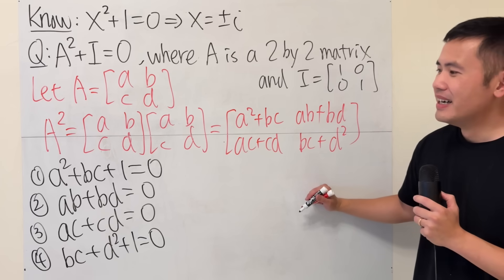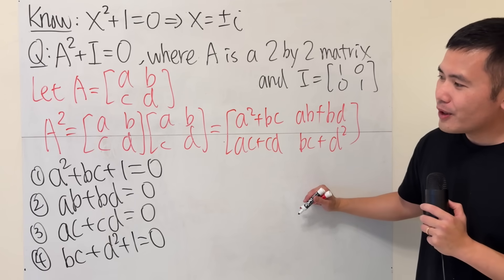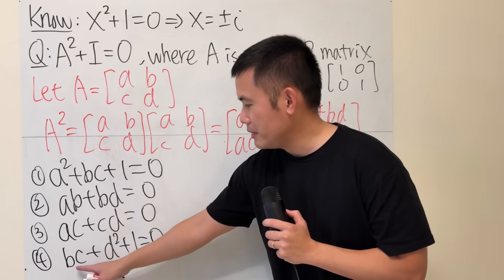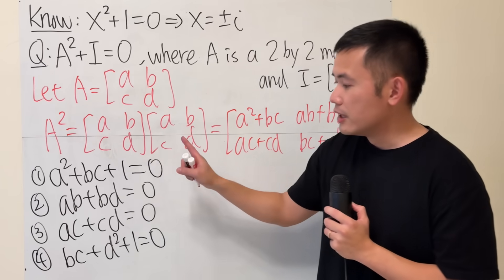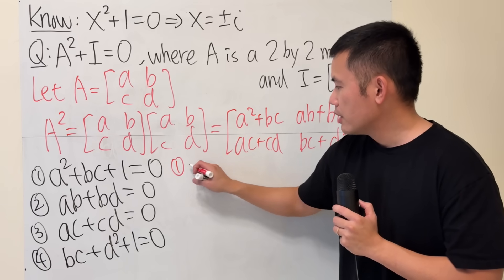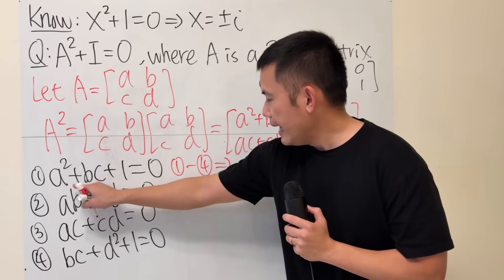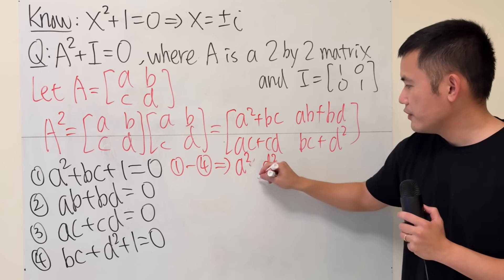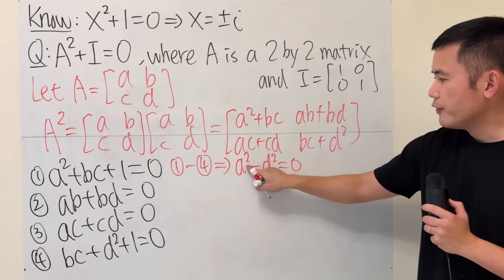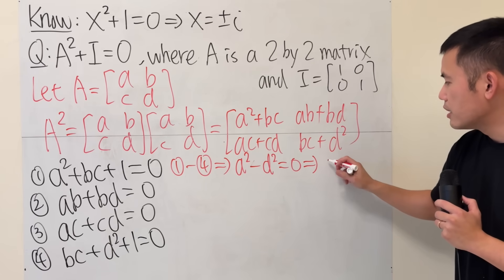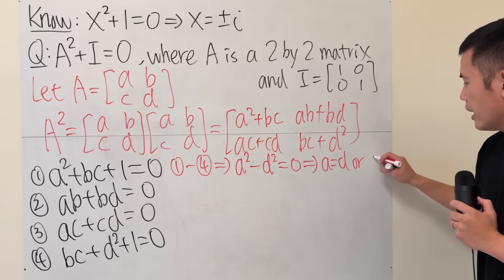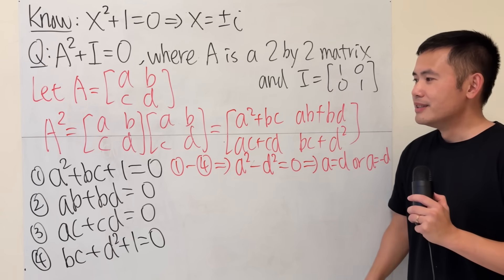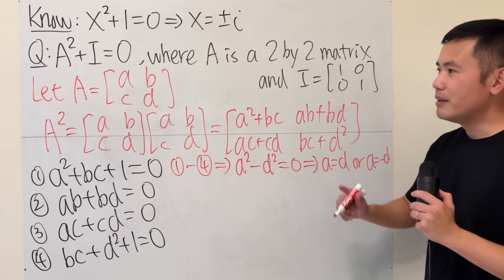These are the four conditions we need — not so easy, right? Looking at equations 1 and 4, both contain bc and 1. Subtracting equation 4 from equation 1 gives a² minus d² = 0, which factors to give us either a = d or a = negative d. We have to consider both cases.